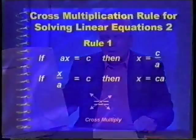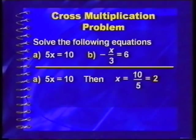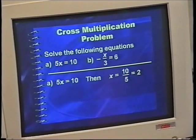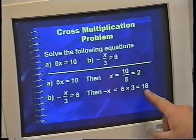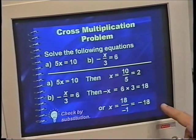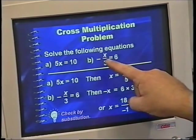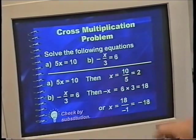We cross on the equals sign — that's cross-multiplication. For the problem 5X equals 10: we cross the 5 over and get X equals 10 divided by 5, which equals 2. For negative X over 3 equals 6: we cross the 3 over to make it 18, giving negative X equals 18. We then divide by negative 1 to get X equals negative 18. You can always check by substitution: substituting negative 18 gives a negative times negative, making positive 18 over 3, which equals 6.